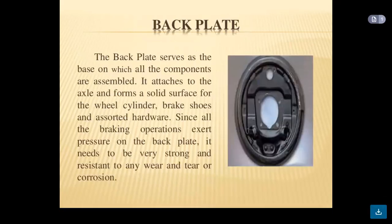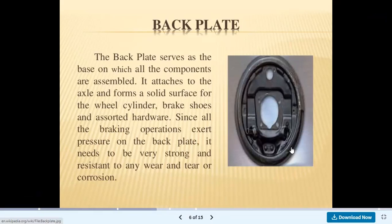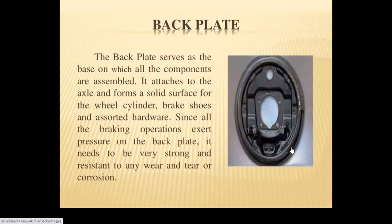Looking at components one by one: the back plate is an important part that serves as the base on which all components are assembled — the wheel cylinder, brake shoes, self-adjuster, parking brake cable, and hardware and springs are all mounted on it. It attaches to the axles and forms a solid surface for the wheel cylinder, brake shoes, and assorted hardware. Since all braking operations exert pressure on the back plate, it needs to be very strong and resistant to wear and corrosion.